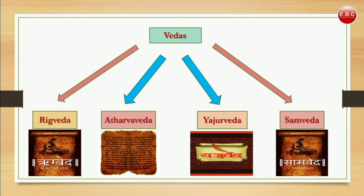The Vedas are the most precious and oldest written literature on earth. The Rig Veda is the oldest Veda and includes valuable information on plants having therapeutic benefits. The Atharva Veda includes detailed information on over 280 medicinal plants. The Yajur Veda and Sama Veda also contain information about medicinal plants in a scattered manner. Ayurveda is derived from these Vedas.